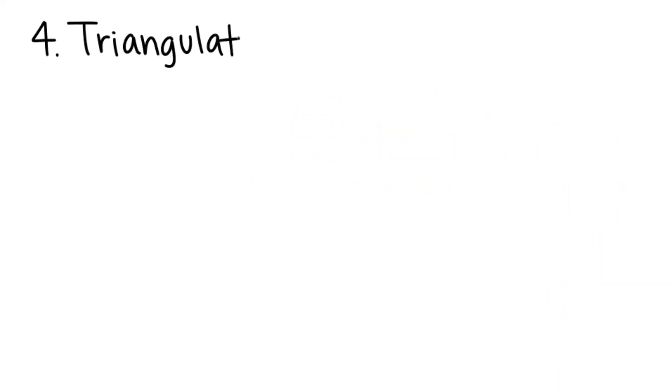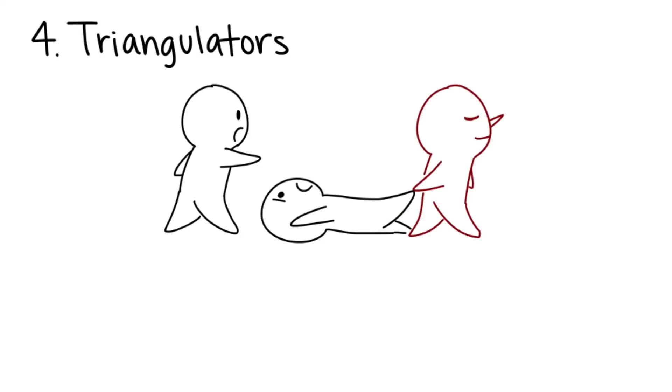4. Triangulators. These people always try to get others on their side. They're quick to say nasty things and put you down. They separate good friends and drive wedges in between families.